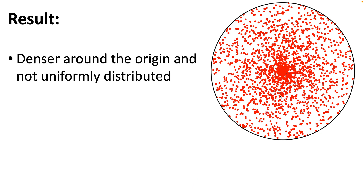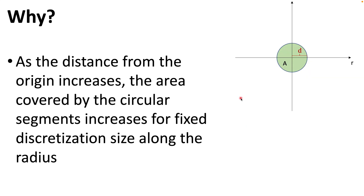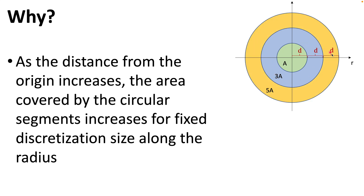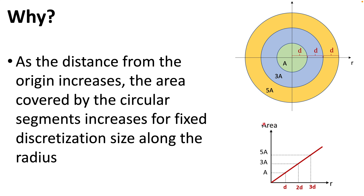If we apply this and look at the results, the distribution is denser around the origin and not uniformly distributed, which is not what we expected. The reason is that as the distance from the origin increases, the area covered by the circular ring segments increases as well. For radius d the ring area is a, at distance 2d the area is 3a, and at distance 3d the area is 5a — and this keeps growing.